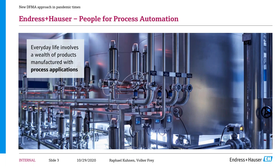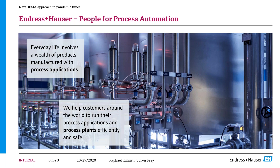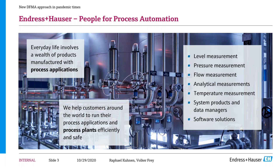E&H is a company for process automation. Everyday life involves manufactured goods from process applications like beer, food, and pharmaceuticals, and we help our customers in process automation efficiently and safely run their companies. We provide sensors for level measurement, pressure measurement, flow, analytical, and temperature measurements, as well as software solutions like IoT solutions and system products.